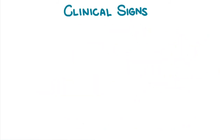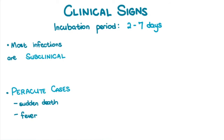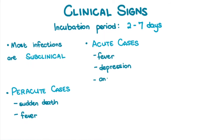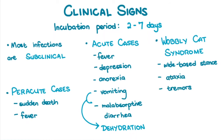Clinical findings: Feline panleukopenia virus has an incubation period ranging from two to seven days. Most infections are subclinical. Some cats may die suddenly in peracute cases, or may only develop a fever. Acute cases typically present with fever, depression, and anorexia. Repeated vomiting develops a couple of days after the onset of fever, followed by malabsorptive diarrhea resulting in dehydration. In cases of wobbly cat syndrome, the kitten may present with a wide-based stance, ataxia, tremors, and sometimes retinal lesions appearing as gray foci.